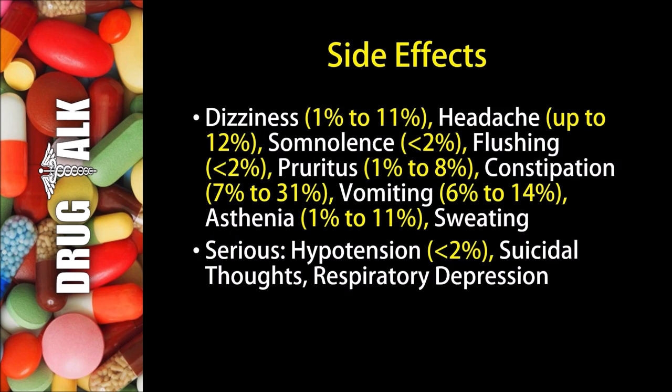Now, as with all medications, there are some side effects or adverse reactions that patients may experience while using hydromorphone. Dizziness may happen between 1-11% of the time, and up to 12% of patients may develop a headache. Less than 2% may develop somnolence, and also less than 2% may develop flushing. Pruritus, or itchiness, may happen 1-8% of the time, and 7-31% may develop constipation.